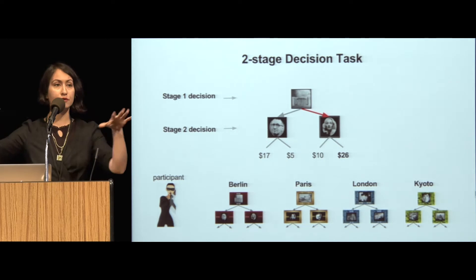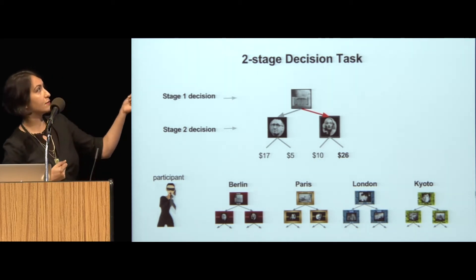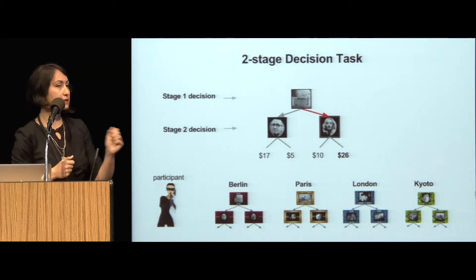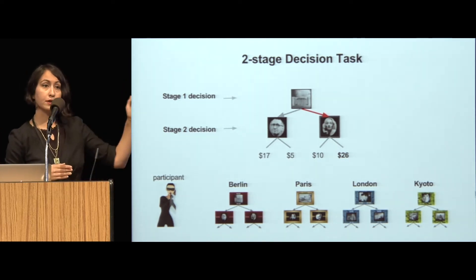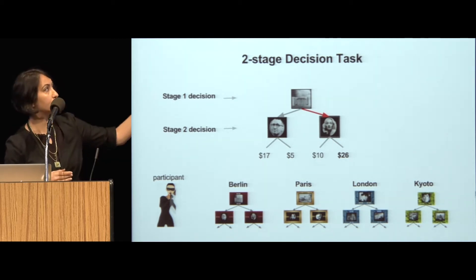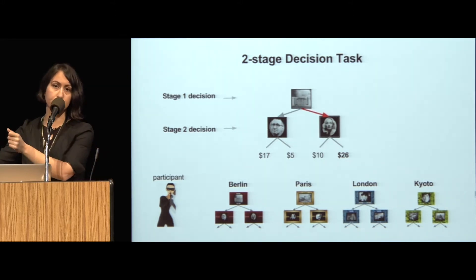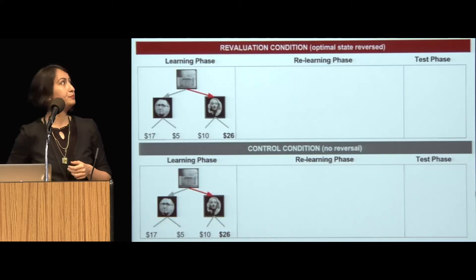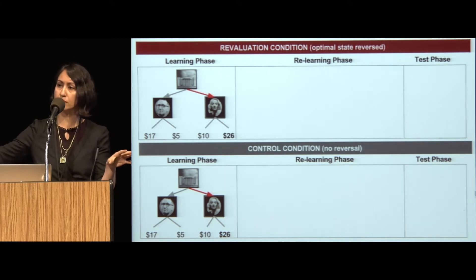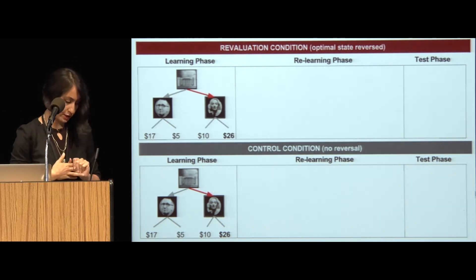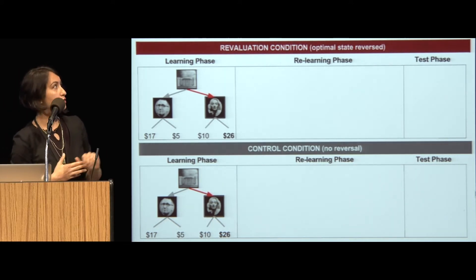It's a two-stage decision. In every context or city, there was a stage one decision — they started at some point, in this case it's a Berlin theater — and then they would choose left or right or up or down to explore this environment. They had two stage two choices: they could go to the break room or they could go to the district room. And from either of those states, when they arrive, they have again another two choices — that's the stage two choice. Half of the trials were in the revaluation condition and half in the control condition, with pseudorandomized assignment across subjects.